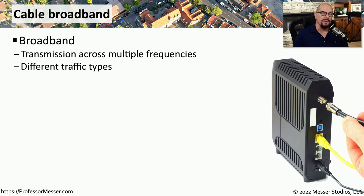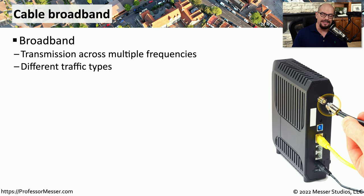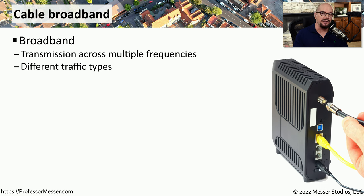If your home or business is serviced by a cable company, then you might have the option for cable broadband. This brings an internet connection into your home or business using the same cable that you would use for cable television. Broadband describes a method of communication where you can send multiple streams of data across a single wire by communicating across multiple frequencies on that wire, which means on a single wire we can transmit video, voice, and data simply by using different frequencies on that same medium.